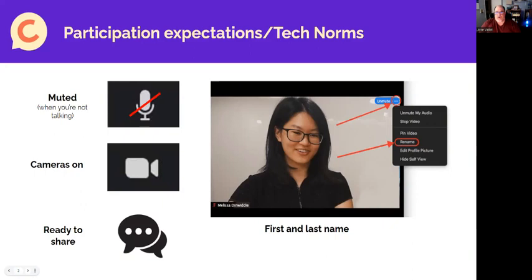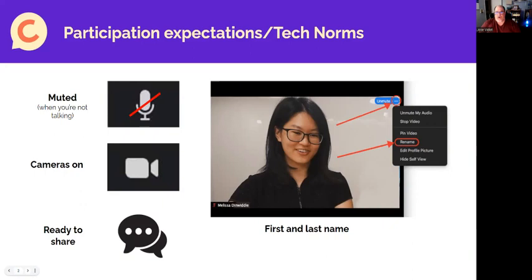And the first thing I want to talk about here is our technology norms. Let's make sure that we have our first and last names on there. So go ahead and rename. Make sure that when you're not speaking that you're muted. Sometimes little brothers and sisters may come in, interrupt you, or maybe your dog might start barking. So make sure that you are muted when you are not speaking and unmuted when you speak. We'd like you to have your cameras on because we would love to see you and get to know you as we work together to learn the subject. And then just be ready to share. That's the key here.